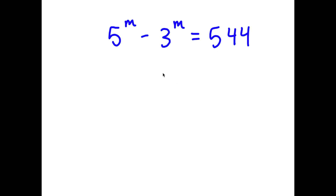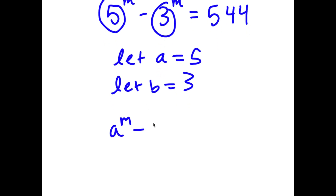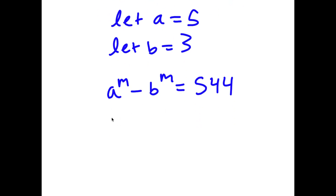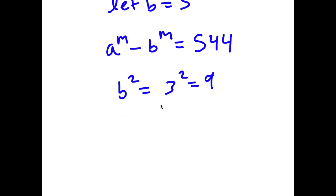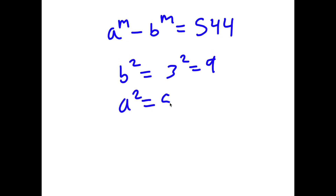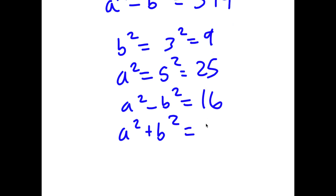So in this problem, I have 5 to the power of m minus 3 to the power of m is equal to 544. I'm first going to let a equal 5 and let b equal 3. So now I have a to the power of m minus b to the power of m is equal to 544. Now b squared is 3 squared which equals 9, and a squared is 5 squared which equals 25. So a squared minus b squared is 25 minus 9, which is 16. And a squared plus b squared is 25 plus 9, which is 34.